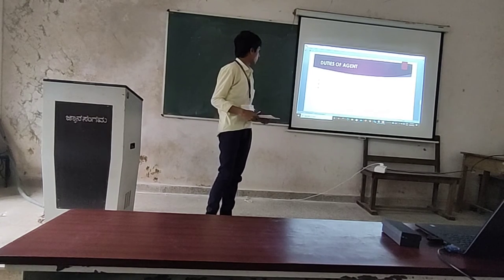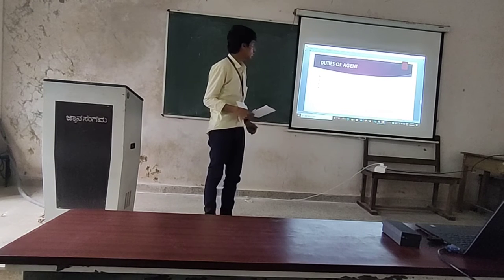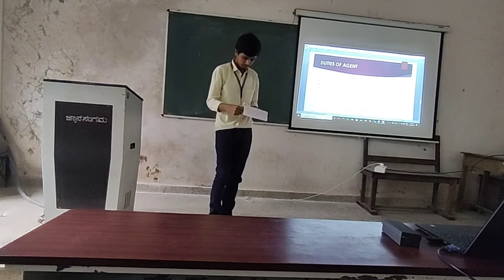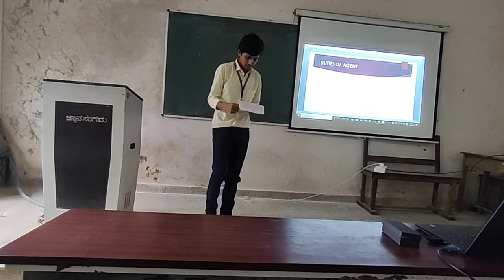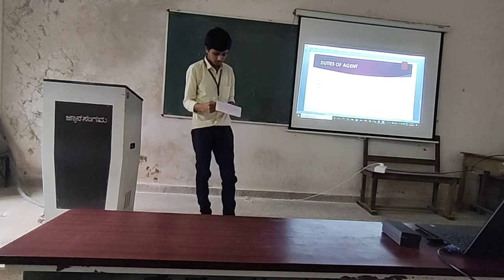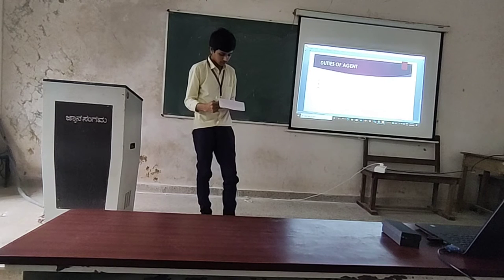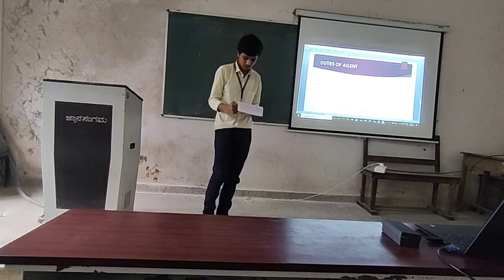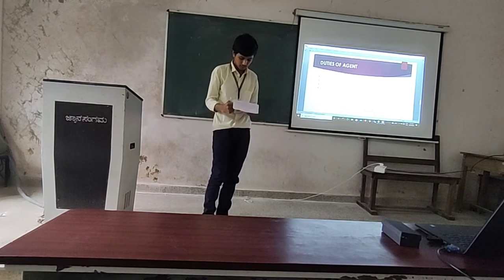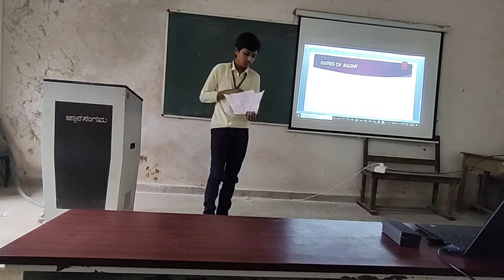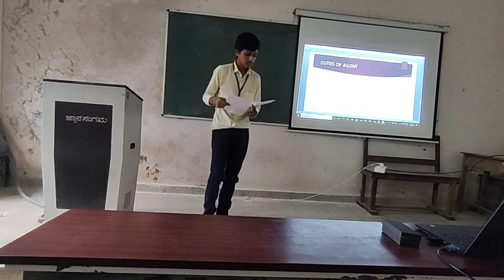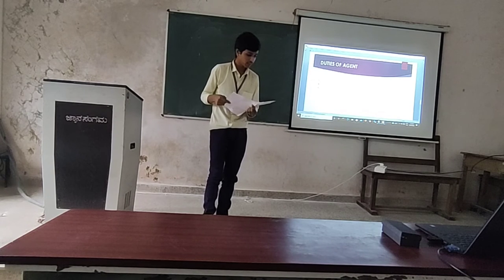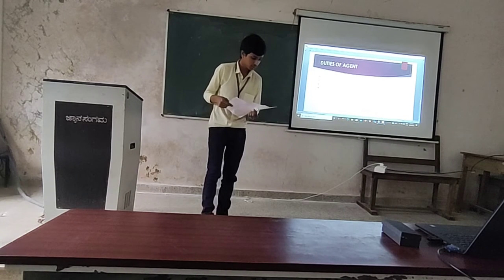Fourth duty: not to use information obtained during the course of the agency against the principal. An agent must not disclose confidential information supplied by the principal to others. He must not use information obtained during the course of the agency against the principal. He must pass on all relevant information to the principal. If he uses such information against the principal and the principal suffers a loss, the agent must compensate the principal for that loss.